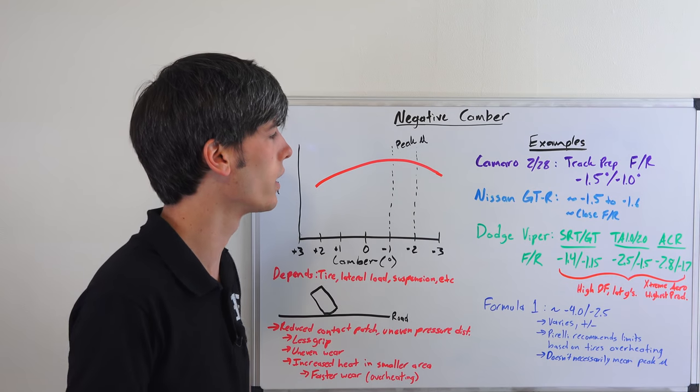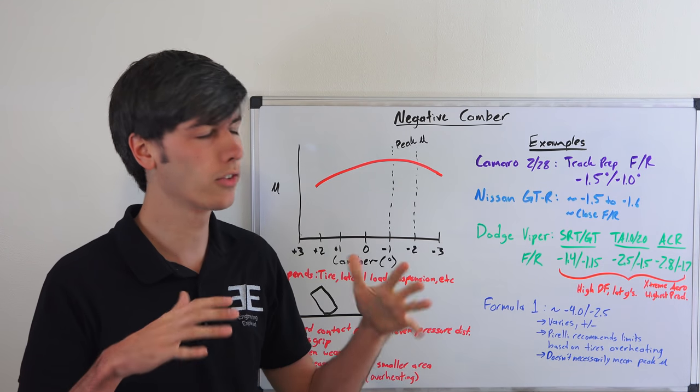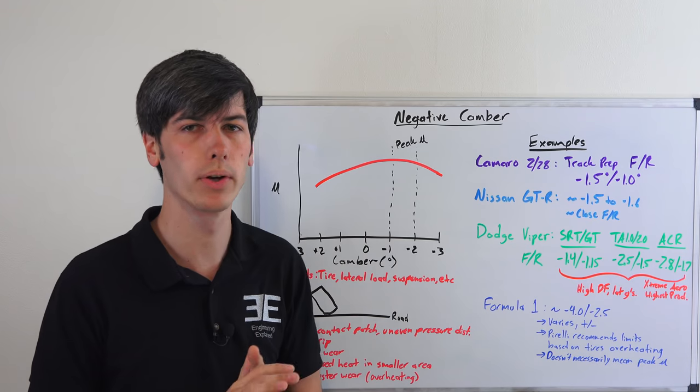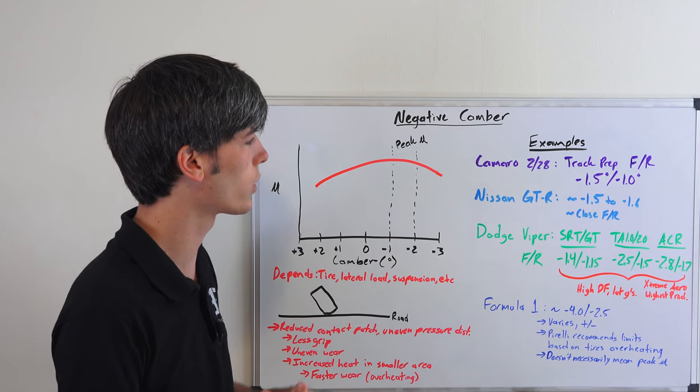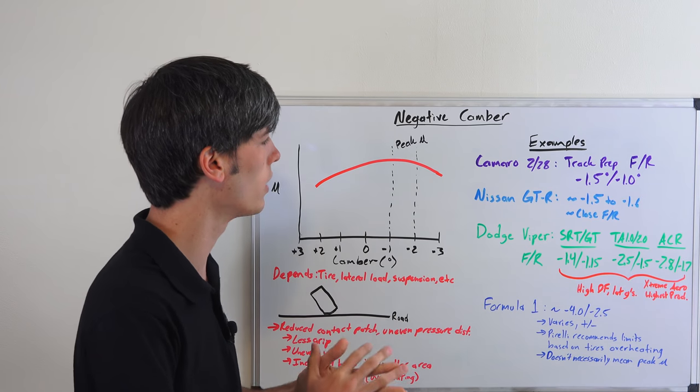For the Nissan GTR it's around negative 1.5 to negative 1.6 front and rear. It's slightly higher in the front than in the rear for track use or daily use. Honestly, they keep them pretty close together.